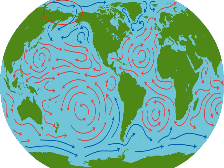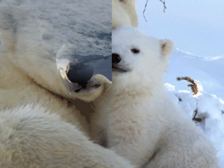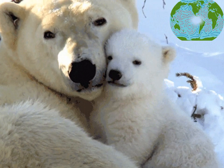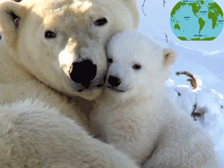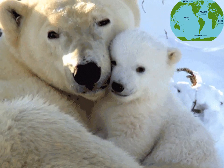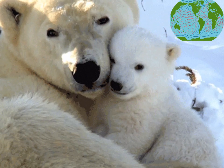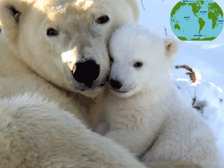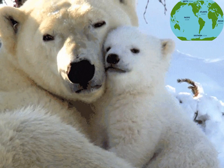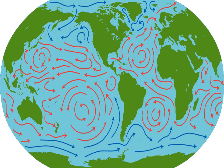Next comes the smallest and shallowest ocean in the world. Yes, it is the Arctic Ocean. The Arctic Ocean is mostly snow-covered and located near the North Pole. And which animal do you get to see here? Yes, polar bears. The Arctic Ocean joins the Atlantic Ocean near Greenland and Iceland and is also connected to the Pacific Ocean.